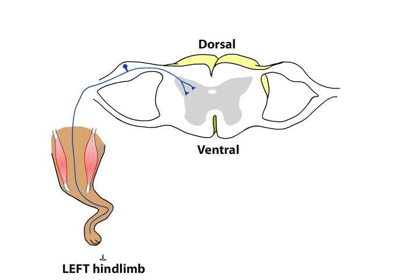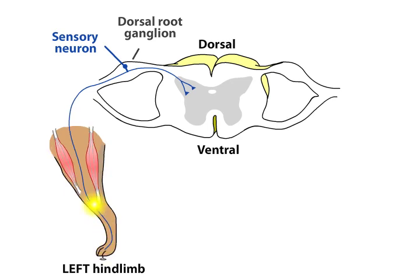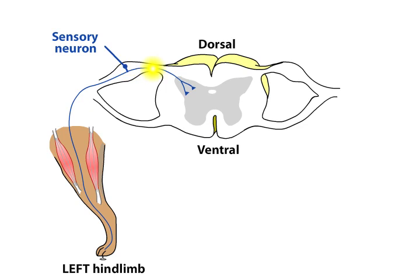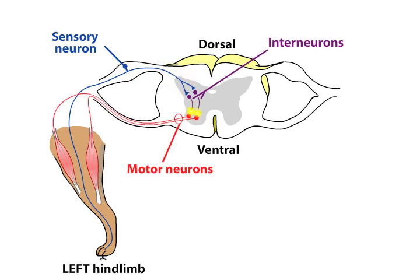The cell bodies of sensory neurons are located in the dorsal root ganglia. Sensory axons enter the spinal cord through the dorsal roots, where they synapse upon interneurons, which in turn project to the motor neurons. The sensory receptors that transmit the sensation of pain are called nociceptors.